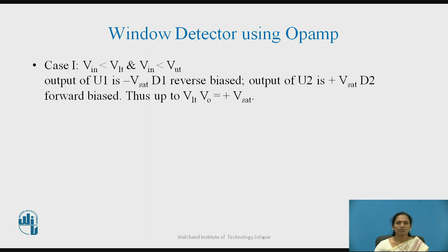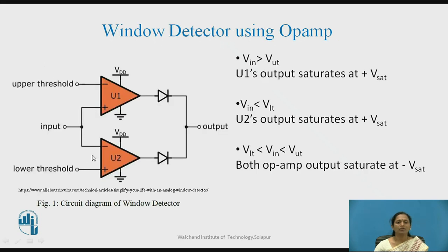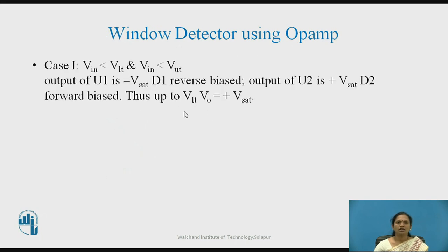In detail, Case 1: when input voltage is less than the lower threshold value and also less than the upper threshold voltage, diode D2 is forward biased. Up to VLT, output voltage is at plus V sat level, because in the circuit diagram, the input signal for OPAMP 2 is applied to the inverting terminal and the threshold voltage is applied to the non-inverting input. Therefore we have this result for Case 1.